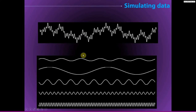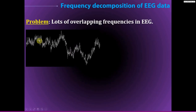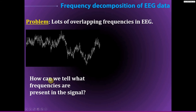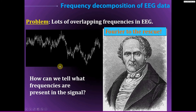This is going in the opposite direction from what we were doing before. And this problem gets even more significant for real EEG data, which has a lot of overlapping frequencies. The question is: how can we tell what frequencies are present in this signal and with what strengths, with what timing? Fortunately, our good friend Joseph Fourier comes to the rescue. Fourier provided us with a theorem, an algorithm, to be able to decompose this signal as a number of sine waves with different frequencies, phases, and amplitudes.